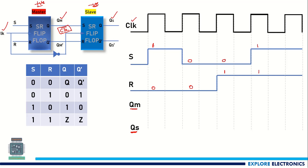Let us look at the output for the first set of values, S=1 and R=0. At the positive edge of the clock we look for the master output. For S=1, R=0, Q will be 1, so QM rises to 1. At that time slave is off, so the previous value continues. At the negative edge, the clock-bar becomes 1, and so the slave output rises to 1 as well.